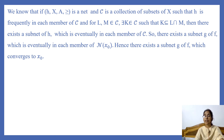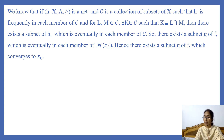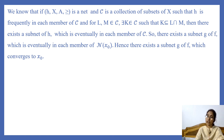Here f satisfies all the conditions: f is a net in X, N(x₀) is a collection of subsets of X, f is frequently in each member of N(x₀), and for any two neighborhoods L and M of x₀, there exists a neighborhood L ∩ M contained in L ∩ M. So all conditions are satisfied. Therefore, from this result we can say that there exists a subnet g of f which is eventually in each member of N(x₀), that is, eventually in every neighborhood of x₀. This means there exists a subnet g of f which converges to x₀.